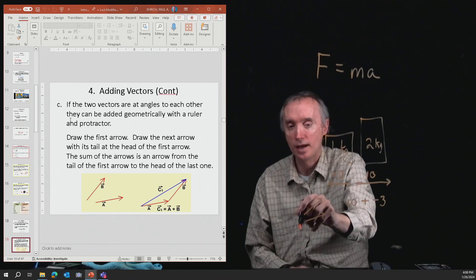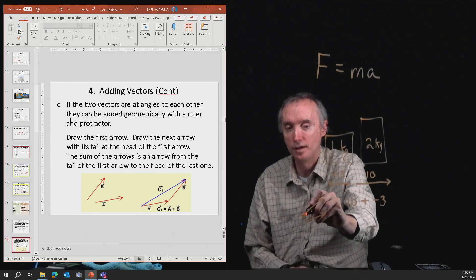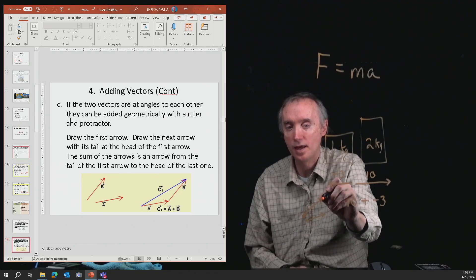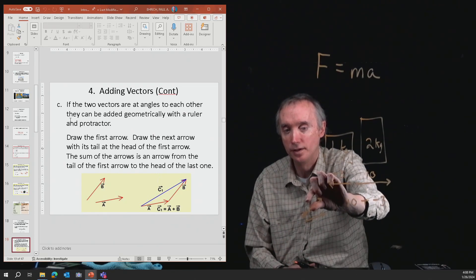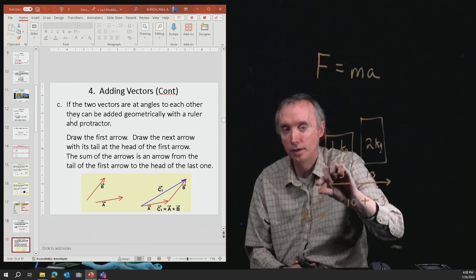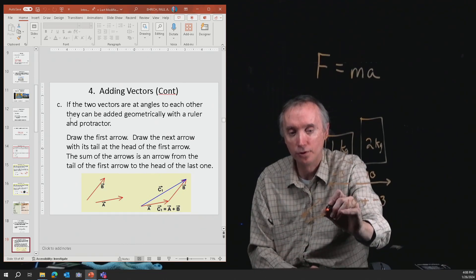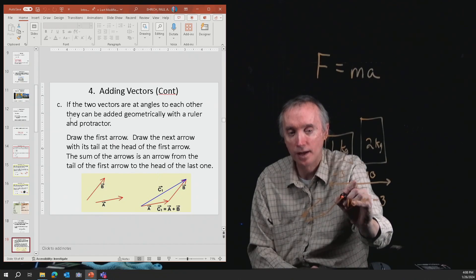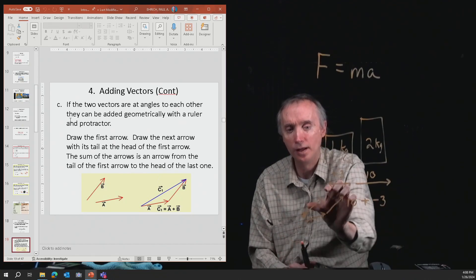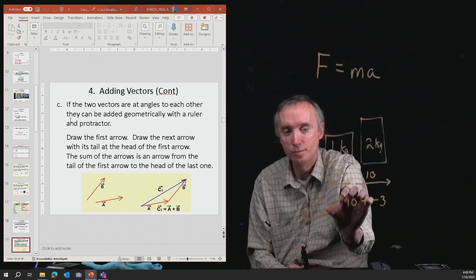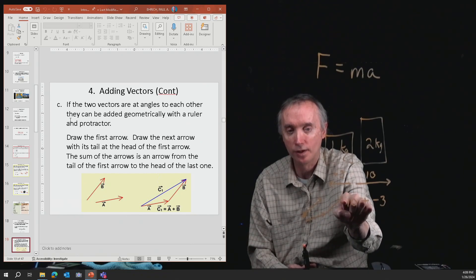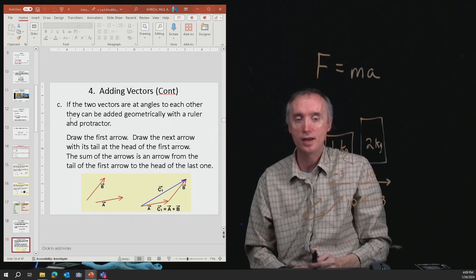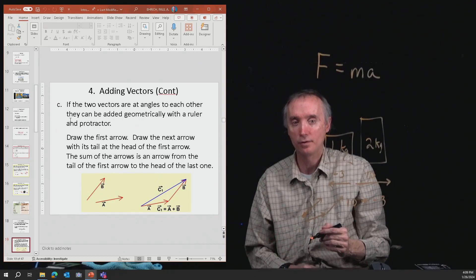So every arrow has a tail and every arrow has a head. We're going to pick this one up. We're going to pretend that we can take this arrow and pick it up, and I'm going to put it over here. Now, it has to be the same length as it was before, and it has to have the same angle. See, it's pointing this way, and this one's pointing this way. So I can't change the angle, and I can't change the length of the arrow.